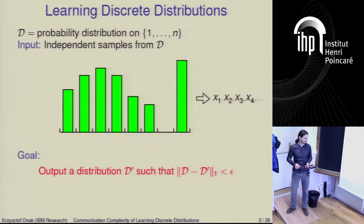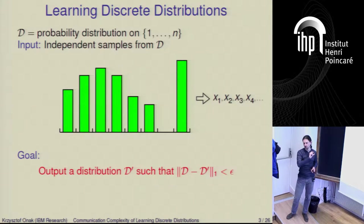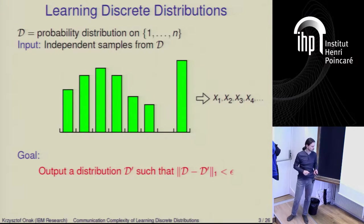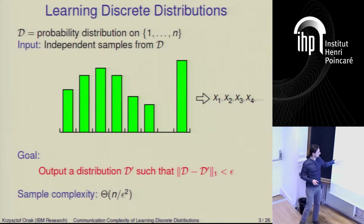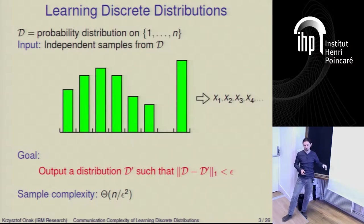What does this L1 distance mean? You can think of each distribution as a vector where all the coordinates are positive real numbers and they sum up to one. The L1 distance between two distributions is just the L1 distance between those two vectors. For this specific task, if the support size is n, it is known that the sample complexity — the number of samples you need to draw — has to be n over epsilon squared in the worst case.